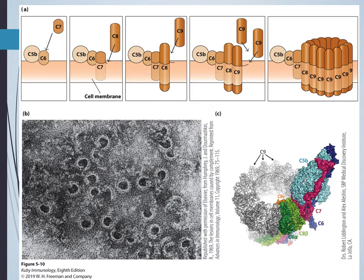In MAC formation, C5B forms on the cell membrane, then C6, C7, and C8 come together. Multiple C9s then insert. Older textbooks stated six C9s, but cryo-electron microscopy has shown that the number of C9s can vary from six to about twenty, changing the size of the pore and the overall size of the MAC.